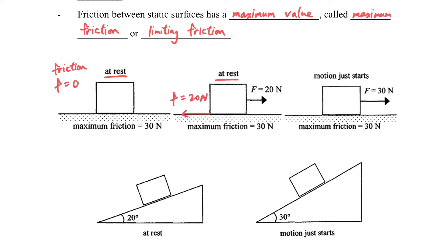But for the other case, even though it is at rest, there is a force acting towards right, so the friction will be 20N to the left. For the third case, you will find that the friction at rest is equal to the friction when the motion just starts.